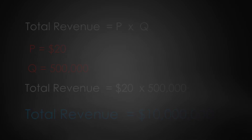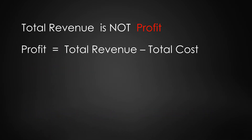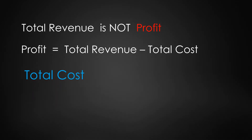But total revenue is not profit. Profit is total revenue minus total costs. We have to subtract our total cost to get our profit. So that brings us to total cost — how do we calculate total cost?